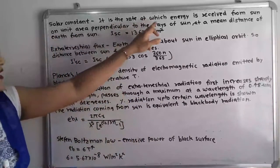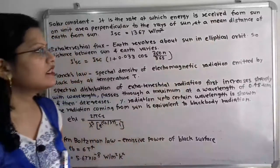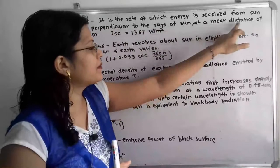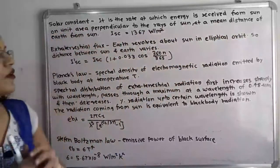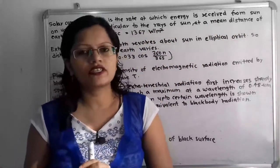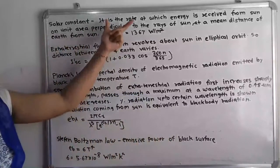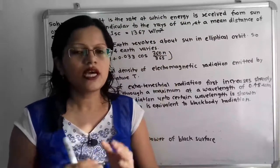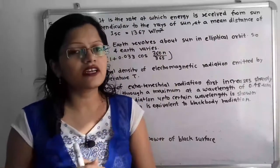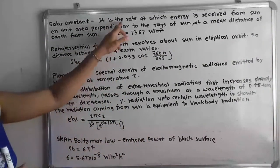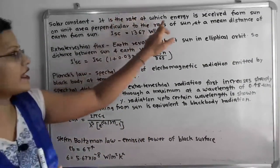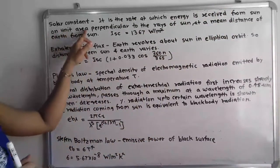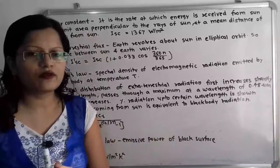The solar constant is the rate at which energy is received from the sun on a unit area perpendicular to the rays of the sun at a mean distance of the earth from the sun. To calculate the rate of energy received from the sun, particular conditions are given. We have to take the unit area on the earth.